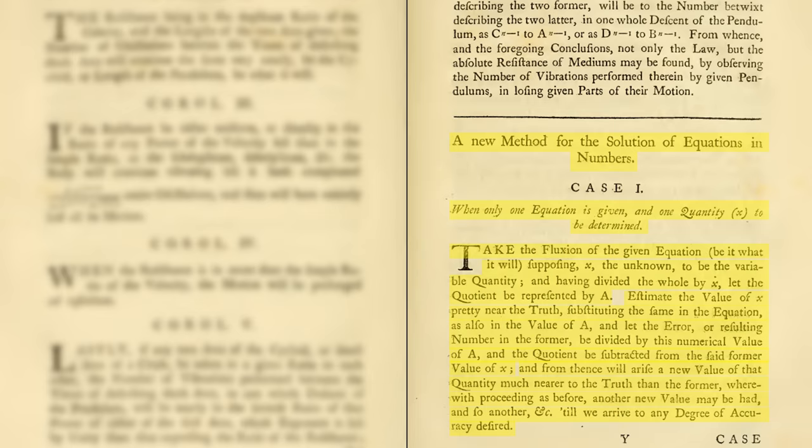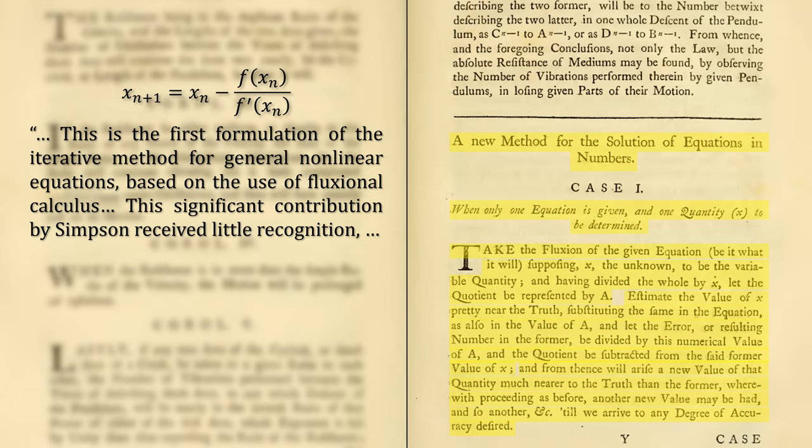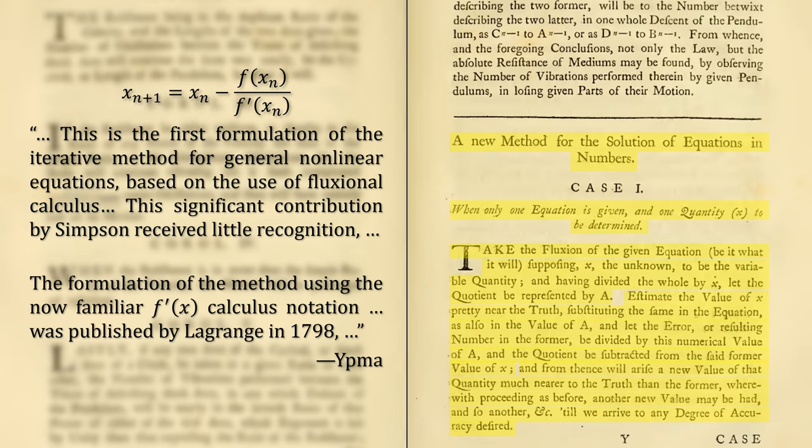What Simpson is describing here is Newton's method, represented in modern terms like this. Ypma writes, This is the first formulation of the iterative method for general nonlinear equations based on the use of fluxional calculus. This significant contribution by Simpson received little recognition. The formulation of the method using the now familiar F prime calculus notation was published by Lagrange in 1798.